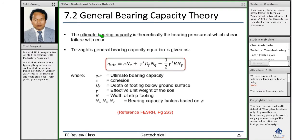Terzaghi has given us these general bearing capacity equations, which represent the capacity of the soil. As given here, Q ultimate equals C times NC plus gamma dash times DF times NQ plus 0.5 gamma dash times B times N gamma. Q ultimate is the ultimate bearing capacity, and C here is known as cohesion.